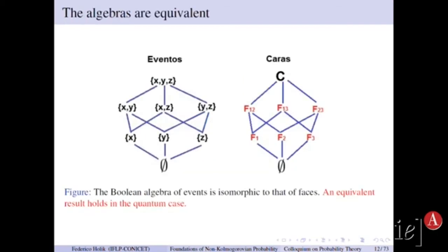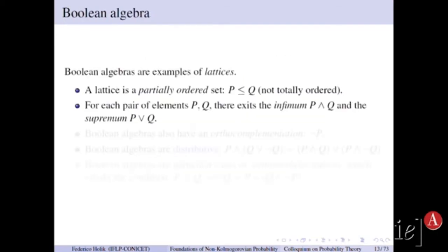Classical probability theory. So what is a Boolean algebra? Boolean algebras are examples of lattices.